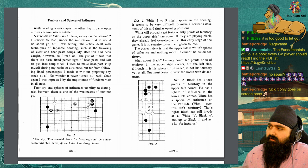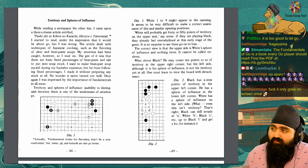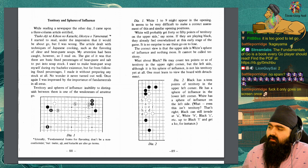The correct view is that the upper side is white's sphere of influence and nothing more. It cannot be called territory. What about black? He may count 10 points or so of territory in the upper right corner, but the left side, although it is his sphere of influence, is not his territory yet at all. One must learn to view the board with detachment.